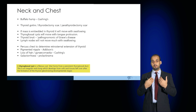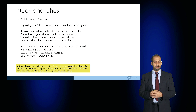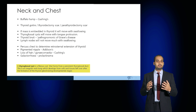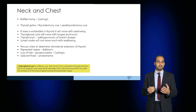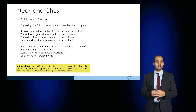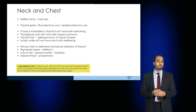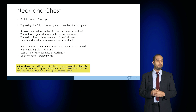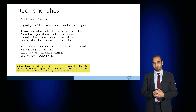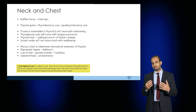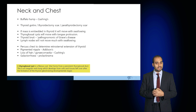From the neck, percuss the chest to detect a retrosternal extension of a thyroid gland. Observe the nipples for pigmentation, the breasts for any loss of hair or gynaecomastia which may be seen in Cushing's disease, and observe whether milk is being expressed or can be expressed as a result of a prolactinoma.